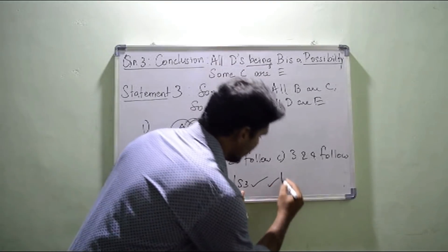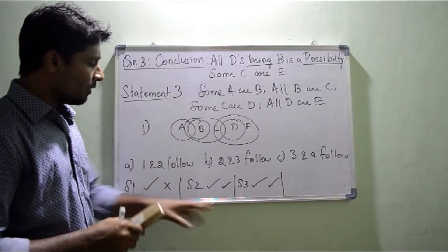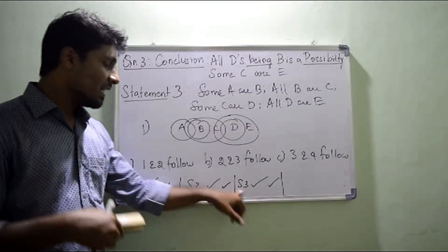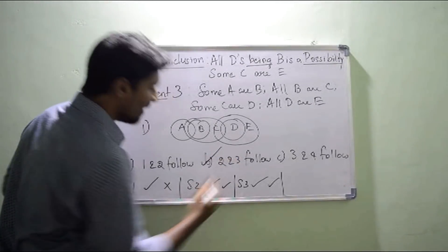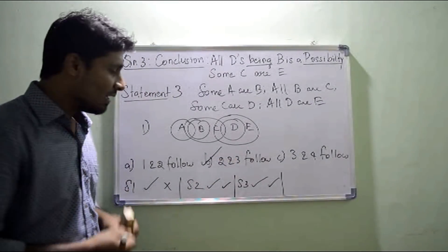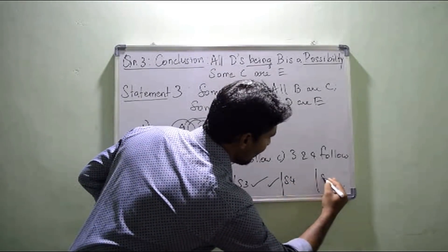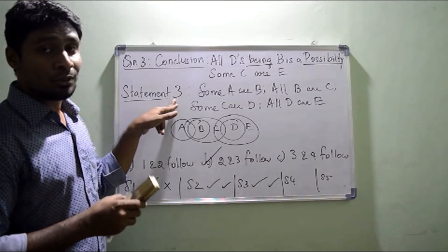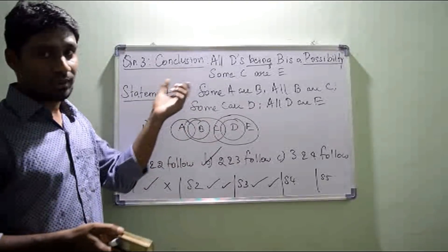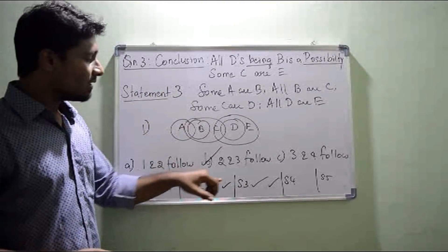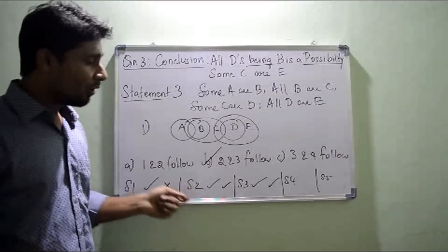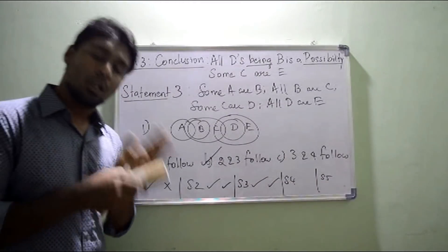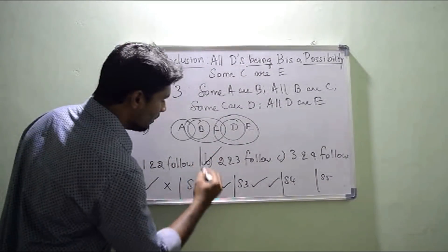So I am getting that statement two and statement three are both following. Looking at the options, two and three follow corresponds to option B. So the answer is B. Is it necessary to check statement four and statement five? No, it is absolutely not necessary. I have checked up to statement three and I'm getting the answer as 2 and 3 follow, so the answer is option B — that is my correct answer.